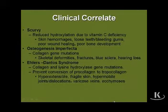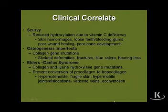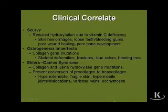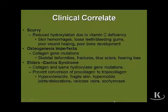Ehlers-Danlos syndrome is caused by hydroxylase gene mutations, and these mutations prevent the conversion of procollagen to tropocollagen outside the fibroblast. These patients present with hyperextensible and fragile skin, hypermobility of their joints, varicose veins, and ecchymosis.